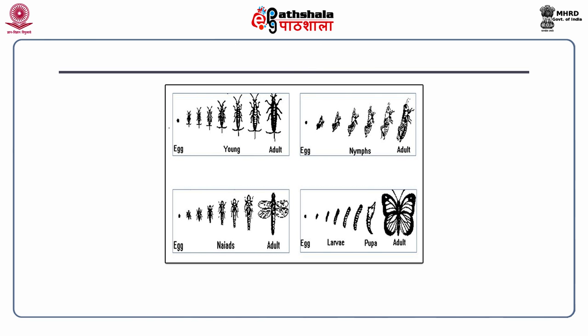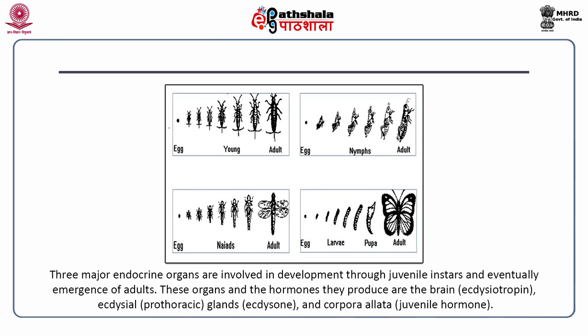The slide shows the four different metamorphic forms: ametabolous, paurometabolous, hemimetabolous and holometabolous. Metamorphosis is basically governed by three kinds of insect hormones: one produced by the brain known as PTTH or ecdysiotropin; a second produced by the prothoracic glands known as ecdysterone; and a third produced by the corpora allata which synthesizes juvenile hormone.